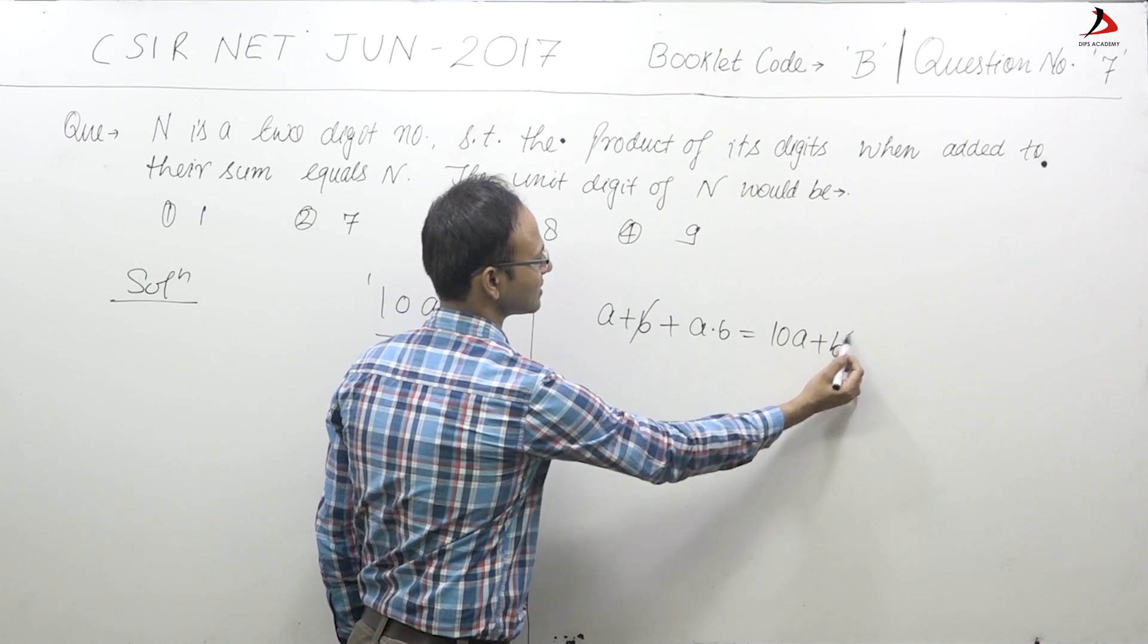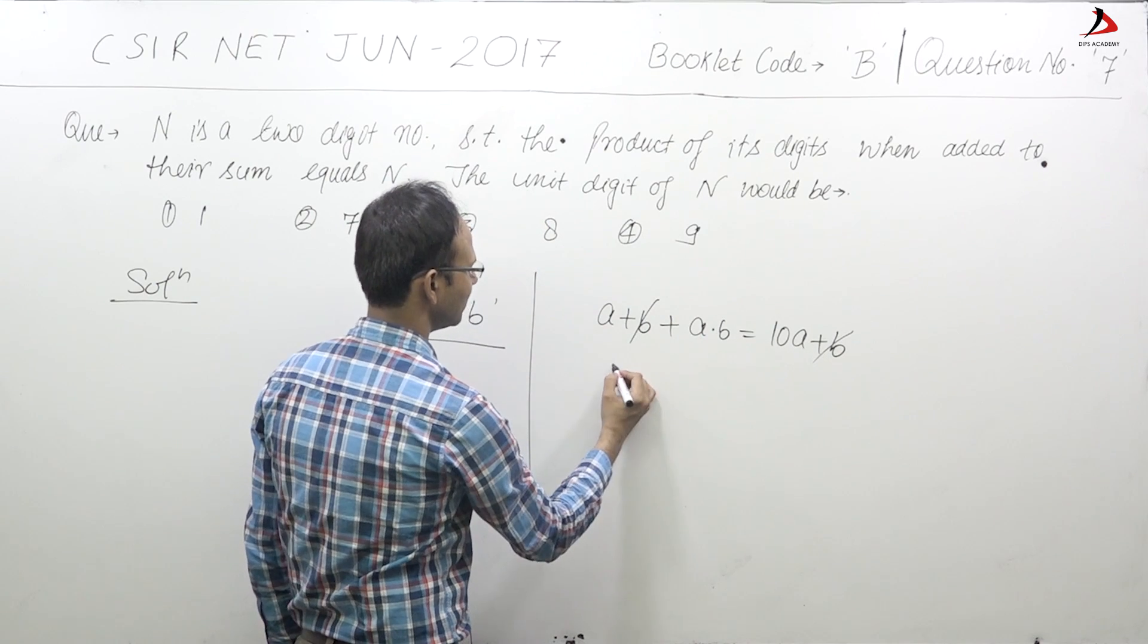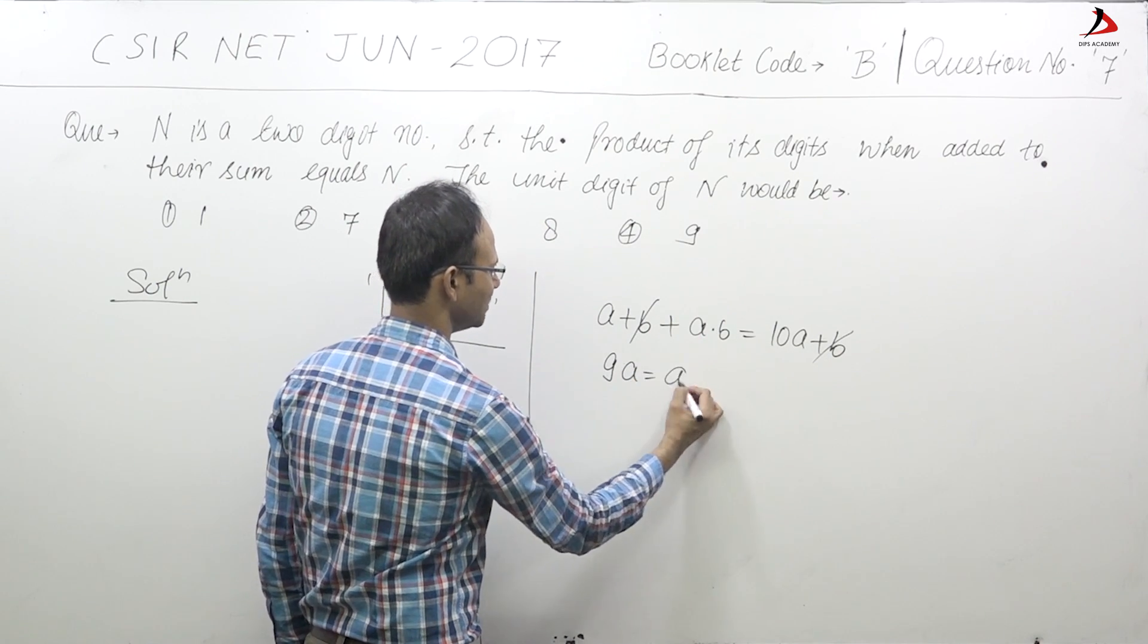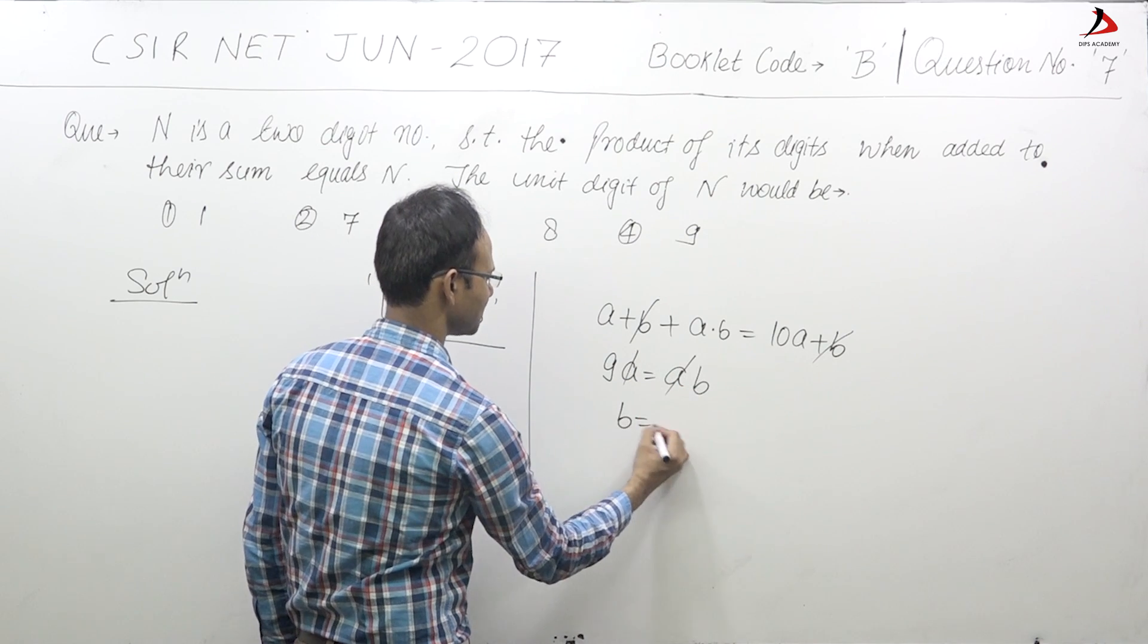So B to B cancelled, and this is 9A equals AB. This is B equals 9.